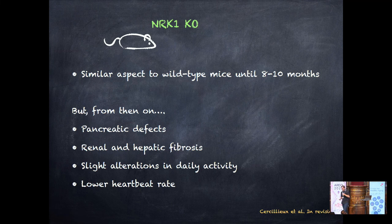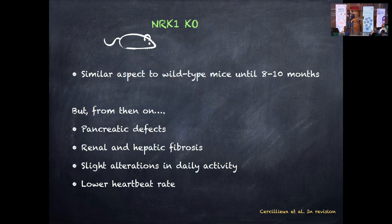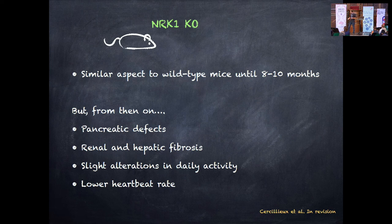The NRK1 knockout mice look very boring in general — no major phenotypes. Yet between 8 and 10 months of age, what I call the midlife crisis for mice, we begin to see effects: pancreatic beta cell dysfunction, fibrosis especially in kidney and liver tissue, and a number of other complex phenotypes. Something is going on with NRK1 or nicotinamide riboside metabolism, but it's a really systemic problem that's difficult to tease apart.